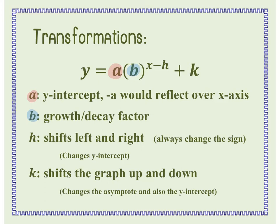H has to be in your exponent. Notice that the formula shows a negative h, so whatever value you see there is really the opposite. If you saw x minus 3, h is not negative 3 — h is a positive 3. This is going to affect your y-intercept, because if you shift the graph, you're also shifting the y-intercept.